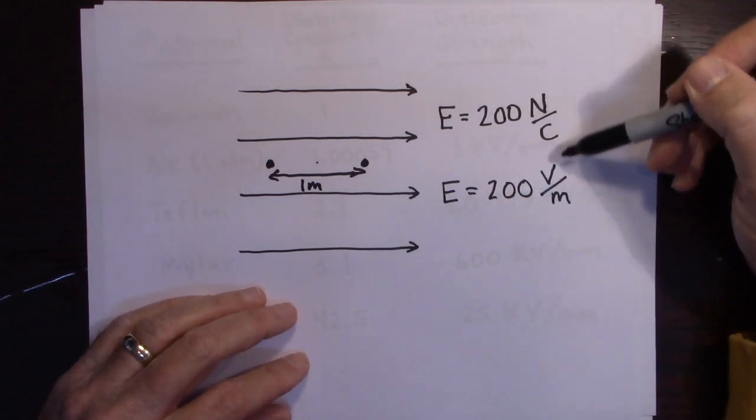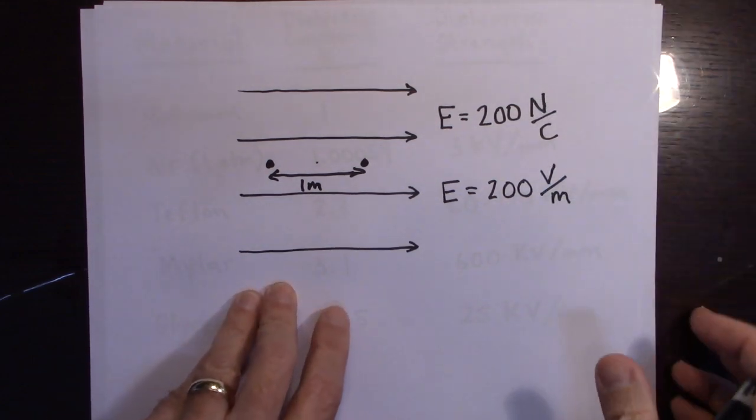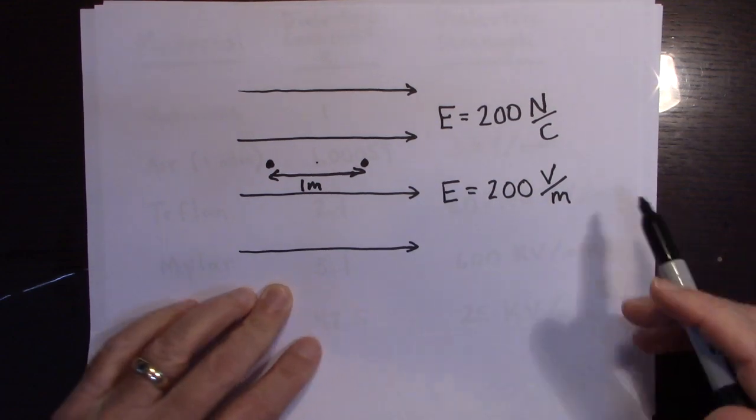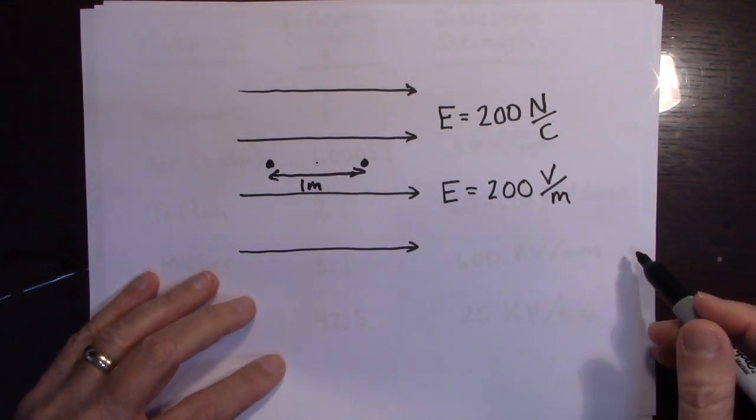So, both of these are the same. So, you can take volts per meter and change it to newtons per coulomb if you do the right thing with the units.